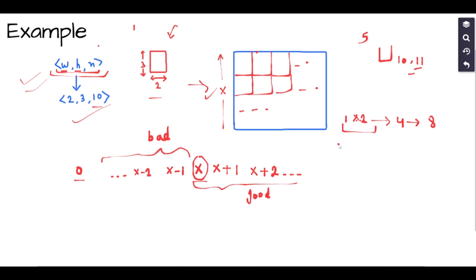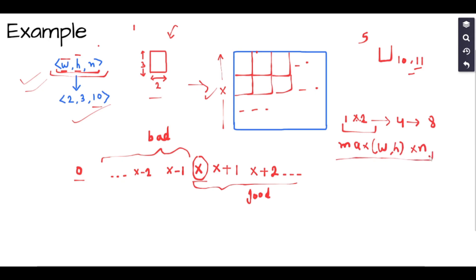A shortcut to find the upper bound is max(w, h) multiplied by n — the larger side of the rectangle multiplied by the number of rectangles. If we take a square of this side length, we can always pack all the rectangles into it. This gives us our right boundary r, while the left boundary l is 0, defining our complete search space.